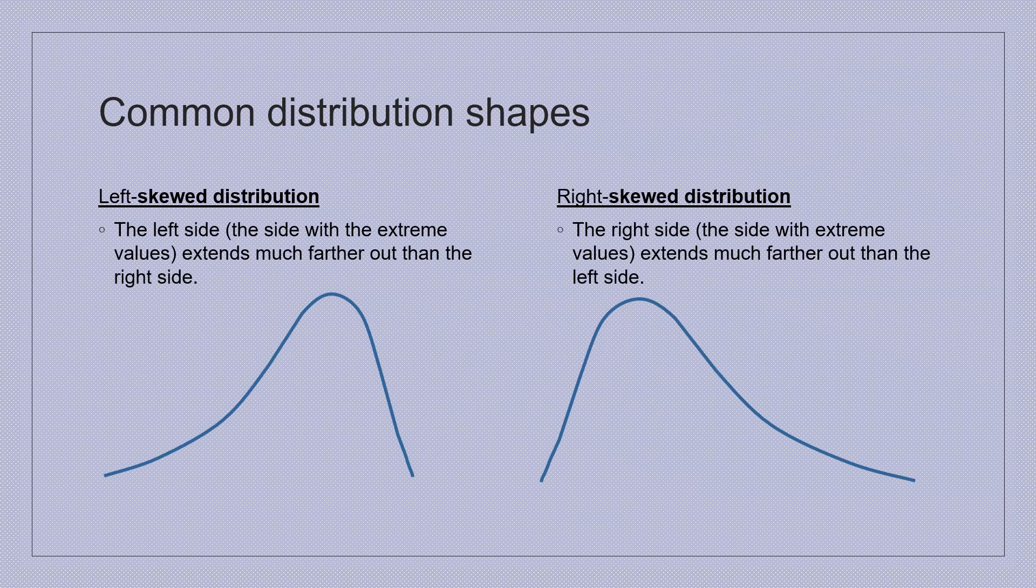You can also have histograms of this type where it is skewed to the left or skewed to the right. See, you may have histograms like this. It is skewed to the right. There is a tail going to the right side of it. It is skewed to the right. And this one is skewed, the other one is skewed to the left.